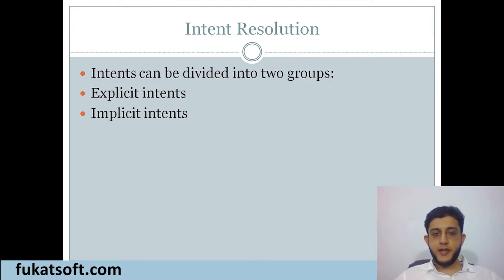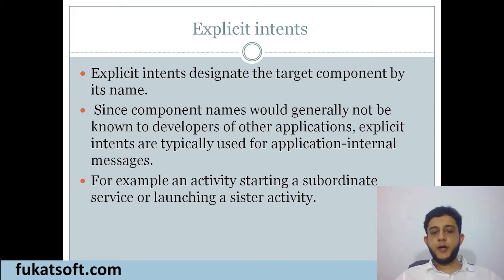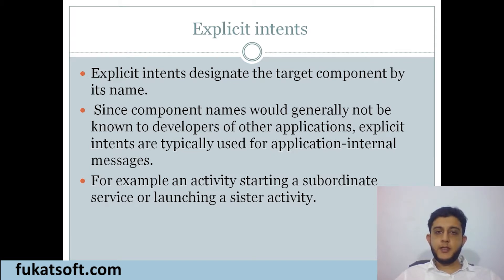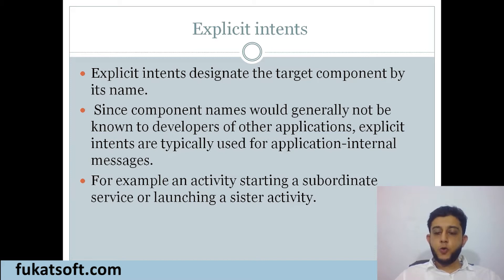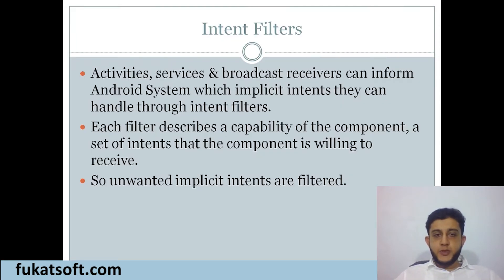Intent کی کچھ types ہوتی ہیں — Explicit Intents اور Implicit Intents۔ Explicit intents بہت easy ہیں اور اس case میں use کیے جاتے ہیں جب user کو directly پتا ہو کہ میں جو activity launch کرنے والا ہوں اس کا نام کیا ہے — جیسے Activity A سے Activity B launch کرنی ہو۔ لیکن 99% cases میں user کو activity کا نام نہیں پتا ہوتا — اسے صرف action، data، MIME type اور category پتا ہوتی ہے۔ اس case میں ہم Implicit Intents use کرتے ہیں۔